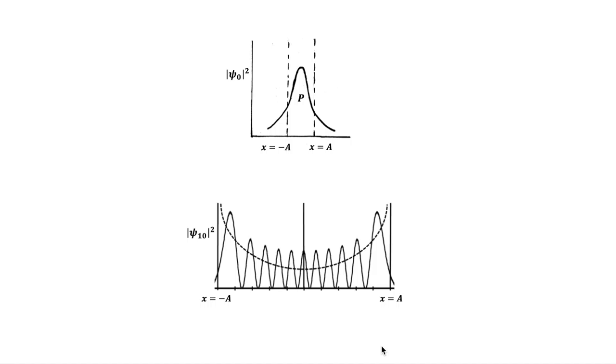But in quantum mechanics, the opposite is true. For a quantum mechanical oscillator for the energy level corresponding to n = 0, the probability density |ψ₀|² has a maximum value at x = 0 and it drops off on either side of this position.